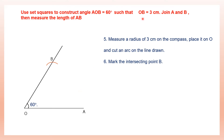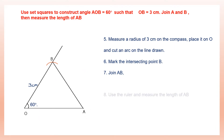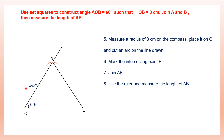So OB is now 3 centimeters — we've measured that on the compass and done it. Next, join A and B. We have A here and B here, so we join AB. Then measure the length of AB using your ruler — that will be your final answer. So we've constructed an angle of 60 degrees using set squares, marked 3 centimeters to get B, joined A and B, and now measure AB.